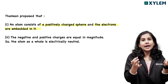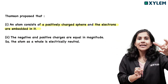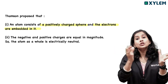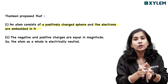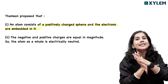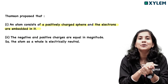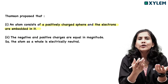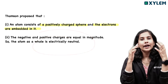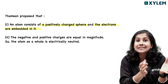J.J. Thomson says the positive charge and negative charge — meaning the electrons — are equal in magnitude. The two charges are balanced and opposite, so they cancel out.